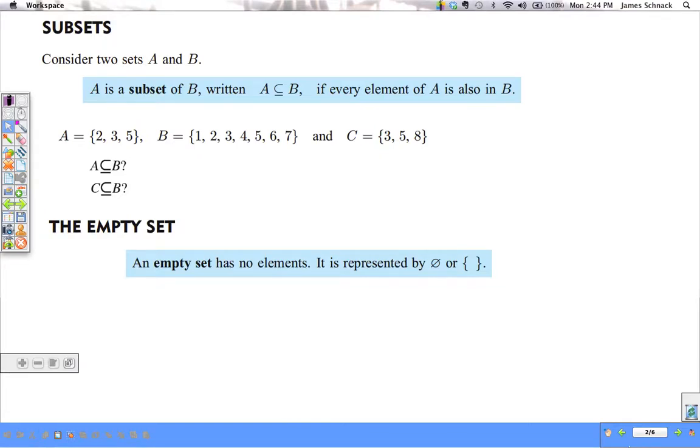Now we talked about subsets. Consider two sets A and B. A is a subset of B, written with this notation here, if every element of A is also in B. We'll do some examples here to help make a little more sense of this. So the question is, is A a subset of B? A consists of 2, 3, and 5. If all of those three elements are in B, A is a subset of it. First we look for 2. There's 2. Is 3 in B also? Yes, it is. And is 5 in B also? Yes, it is. So A is a subset of B.